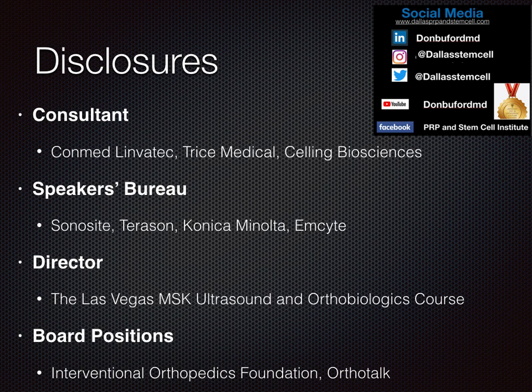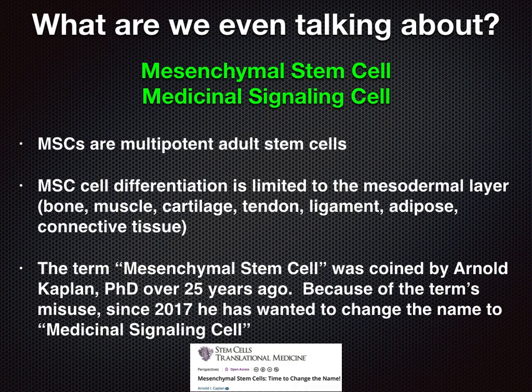I want to first define the talk. We're talking about mesenchymal stem cells, or as alternatively known, medicinal signaling cells. MSCs are multipotent adult stem cells. Cell differentiation is limited to the mesodermal layer, which is the layer that gives rise to bone, muscle, cartilage, tendon, ligament, adipose, and connective tissues. The term 'mesenchymal stem cell' was coined by Arnold Kaplan PhD over 25 years ago. Because of the term's misuse, since about 2017, Dr. Kaplan has wanted to change the name to 'medicinal signaling cells.'